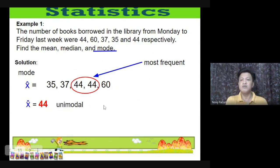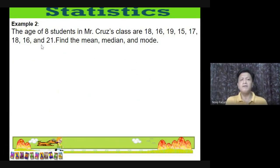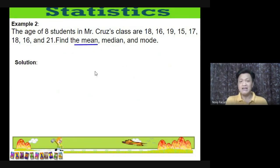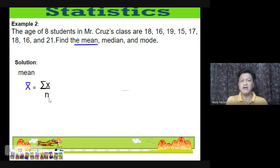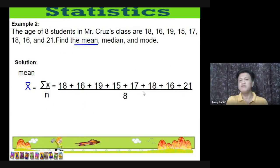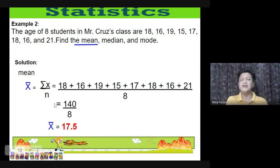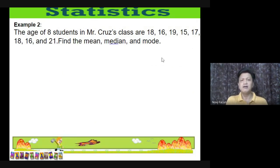Example 2: The ages of eight students in Mr. Cruz's class are 18, 16, 19, 15, 17, 18, 16, and 21. Find the mean, median, and mode. For the mean: add all values and divide by the number of data. 18+16+19+15+17+18+16+21 = 140, divided by 8. The mean is 17.5.